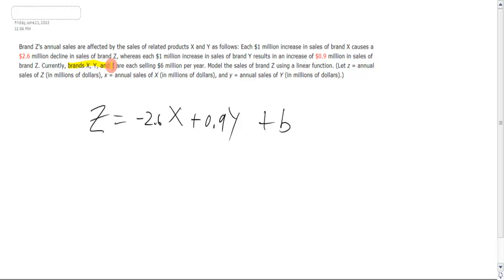You'll see right here they say brands X, Y, and Z each selling $6 million per year. So what we know is that right now, when X sells 6, Y sells 6, Z sells 6, that's our ordered pair.